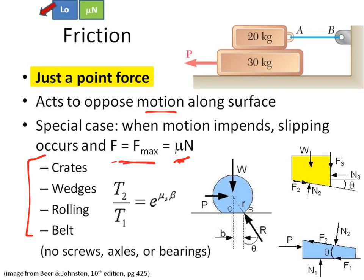We did crates. That would be straight friction. We did wedges. They're not real different here, except that you have to apply equal and opposite forces on the point where the force acts. Notice that F2 is not in the same direction as P. It has to be along the surface of the wedge.